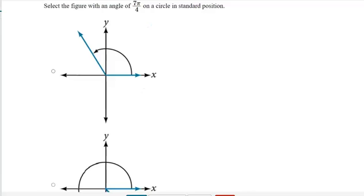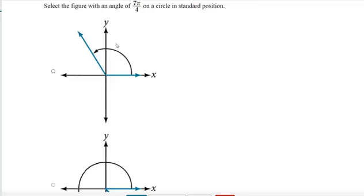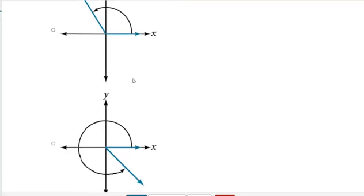So, 7 pi over 4 is a little bit less than 2, right? That's 1.75, so that's not quite a full rotation that's close to being a full 360 degrees. So, that means we're looking for one that's not quite rotating from the initial side all the way to the terminal side, but pretty close.